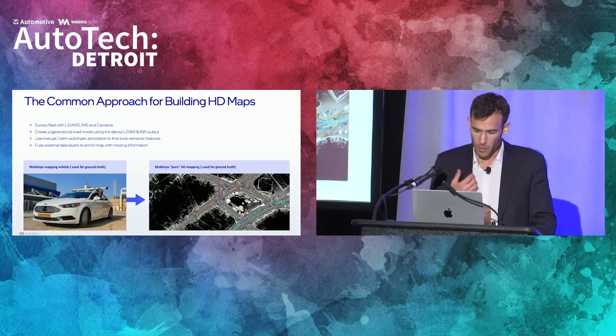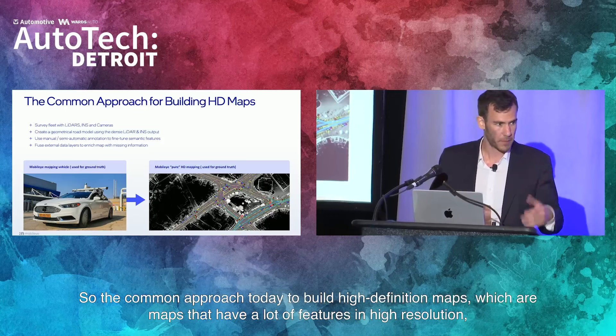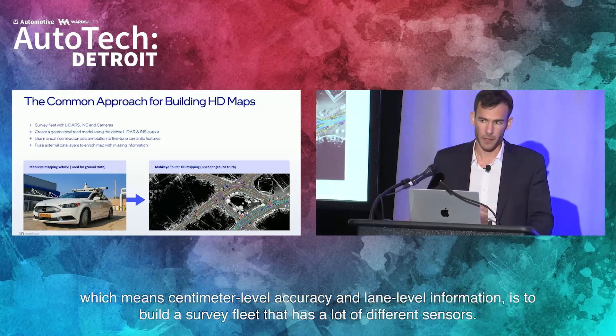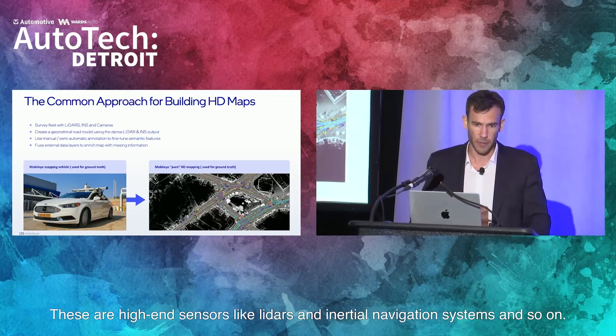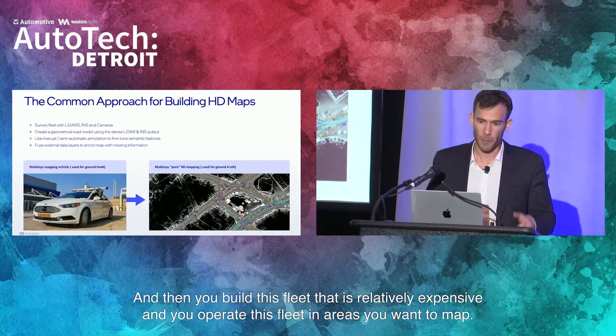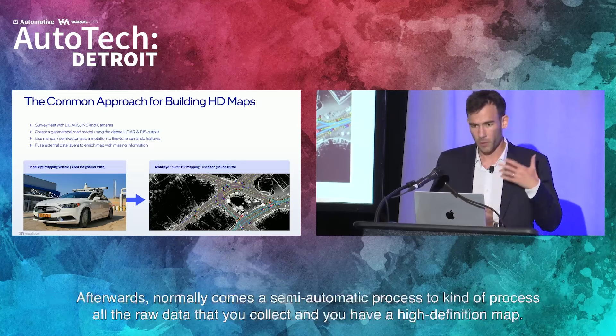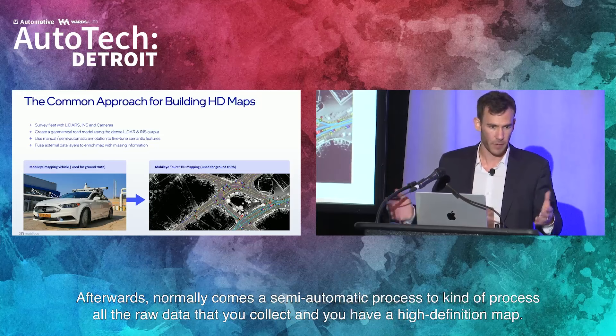The common approach today to build high definition maps — maps with a lot of features at high resolution, meaning centimeter-level accuracy and lane-level information — is to build a survey fleet with a lot of different high-end sensors like LiDARs and inertial navigation systems. You build this relatively expensive fleet and operate it in areas you want to map. For example, to create a map in Detroit, you send hundreds or thousands of cars driving the streets. Afterwards, a semi-automatic process processes all the raw data you collect, and you have a high definition map.